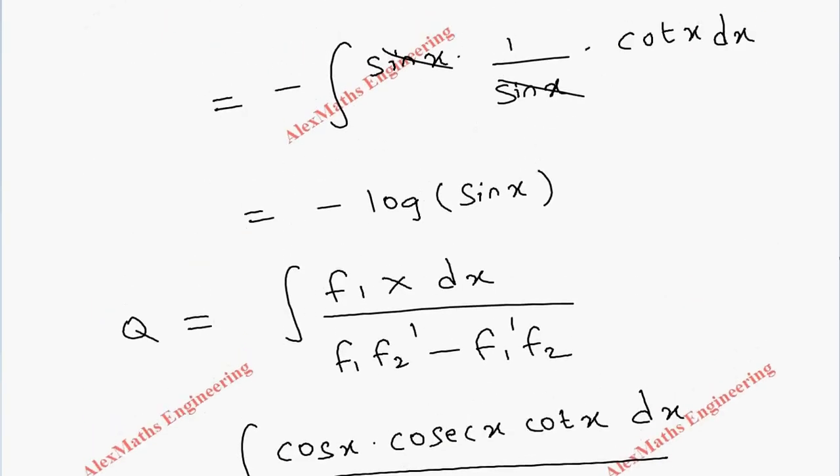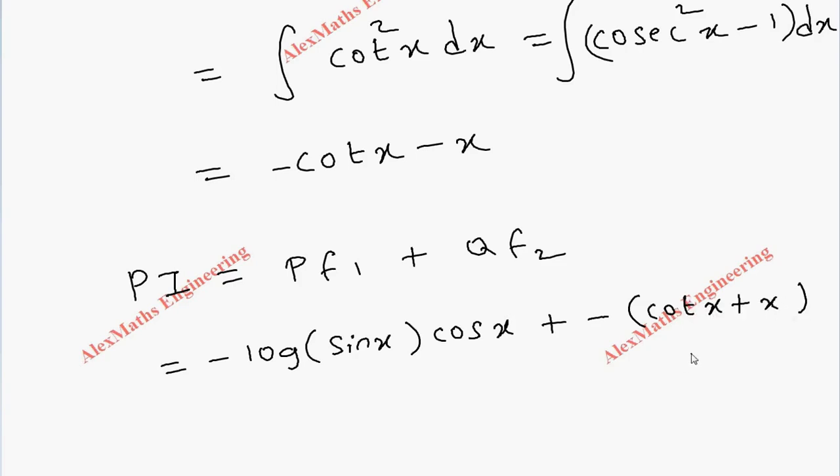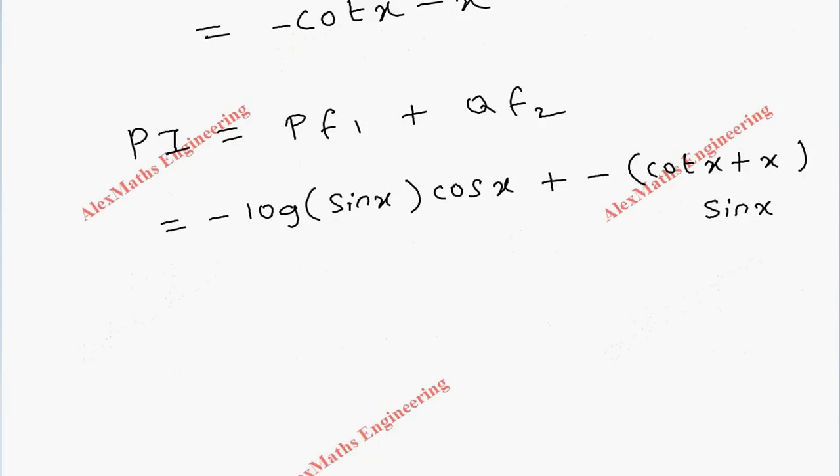We got P and Q. Now let's write the particular integral: PI = Pf₁ + Qf₂. P is -log(sin x) times f₁ which is cos x, plus Q is -(cot x + x), taking the minus common, times f₂ which is sin x.